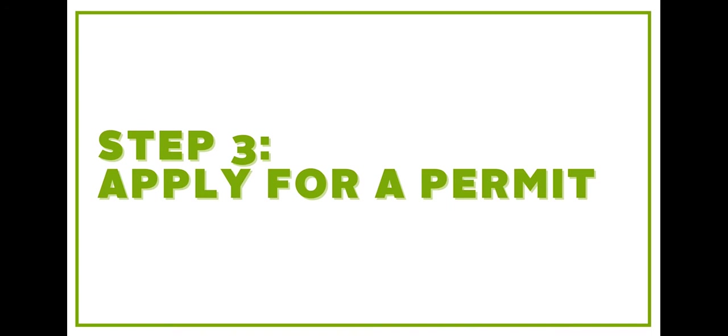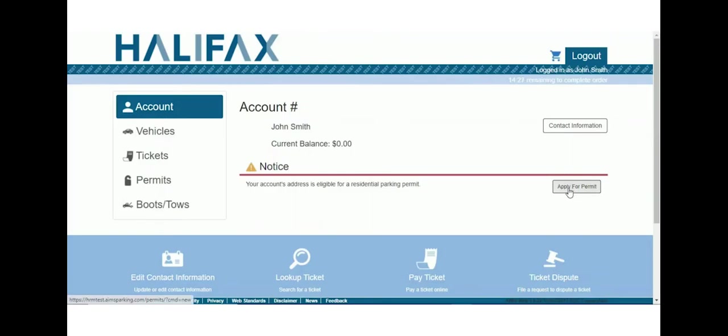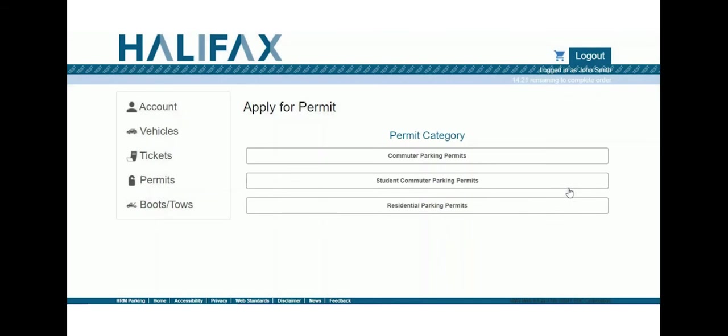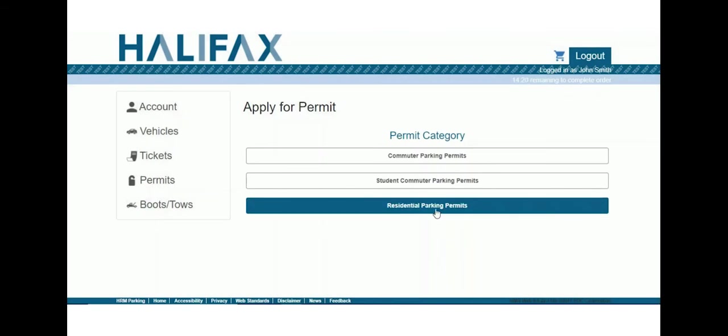After you've registered and logged in, click Apply for Permits to start your application. Select the permit category you want to apply for. In this example, Residential Parking Permit is selected.